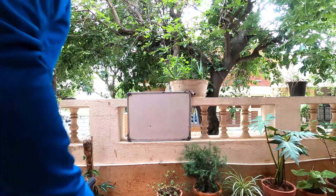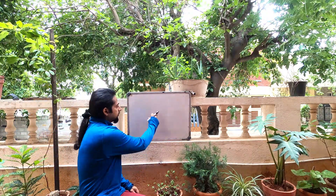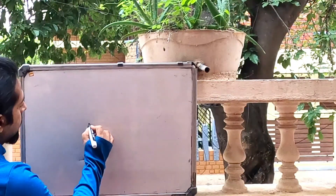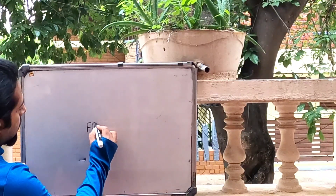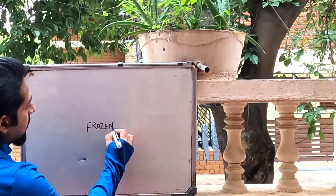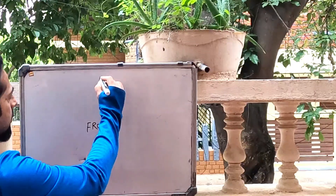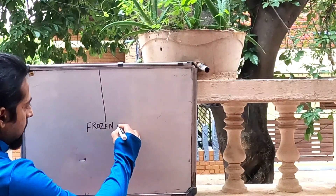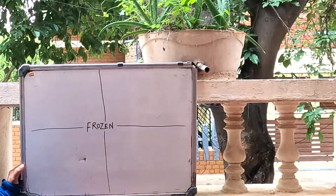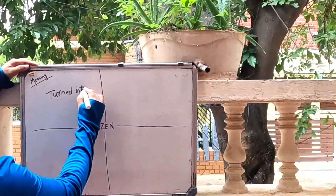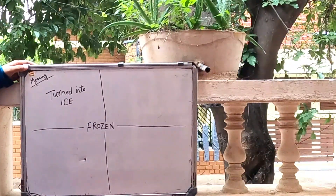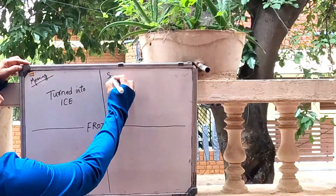First, get a blank paper or a blank board — I am using this board. Choose a vocabulary word to learn. I have chosen the word 'frozen.' Write the vocabulary word in the center, then divide the paper into four parts. On the top left, write the meaning of the word. On the top right, write a sentence using that word.